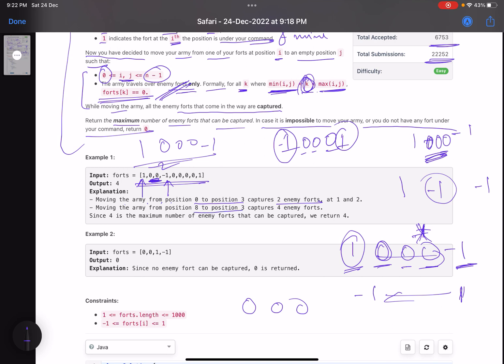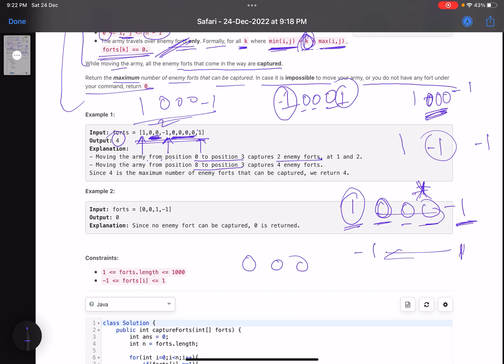What about the other possibilities? Moving the army from position 8 to 3, this is 8 and this is 3. Again see, all are enemy forts: 1, 2, 3, 4. So maximum four forts you can capture.